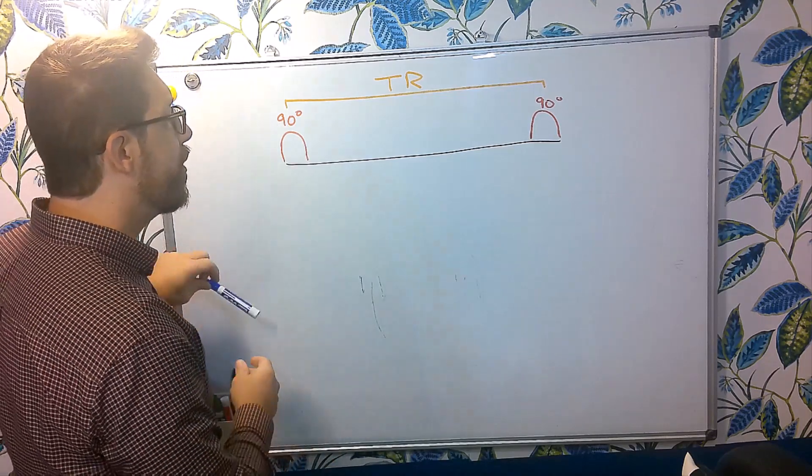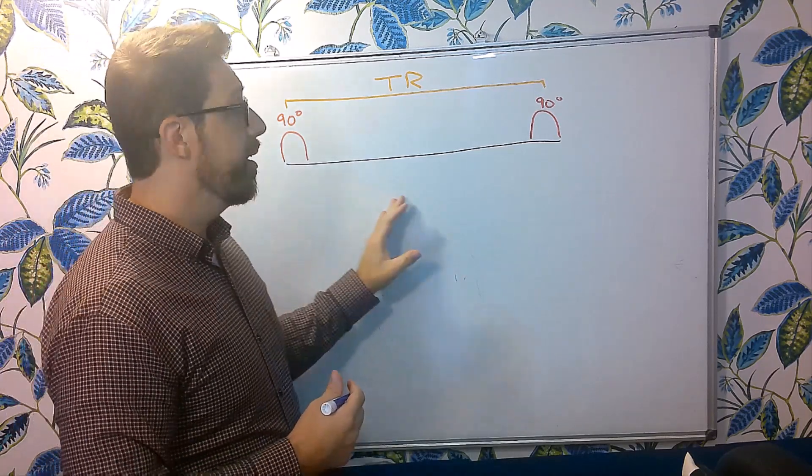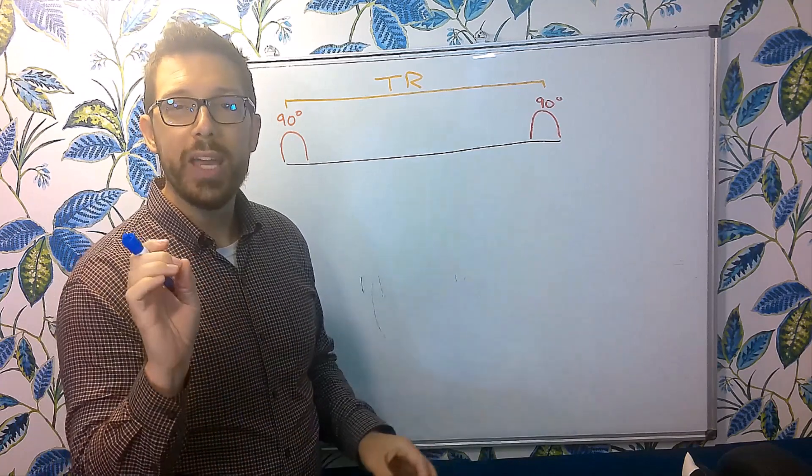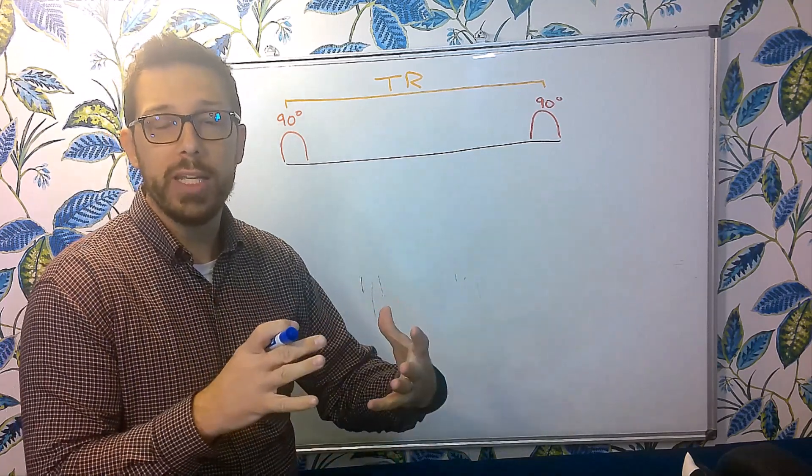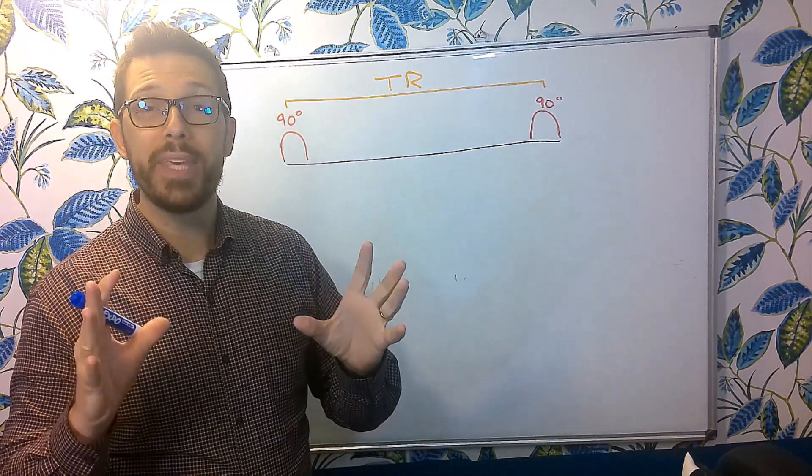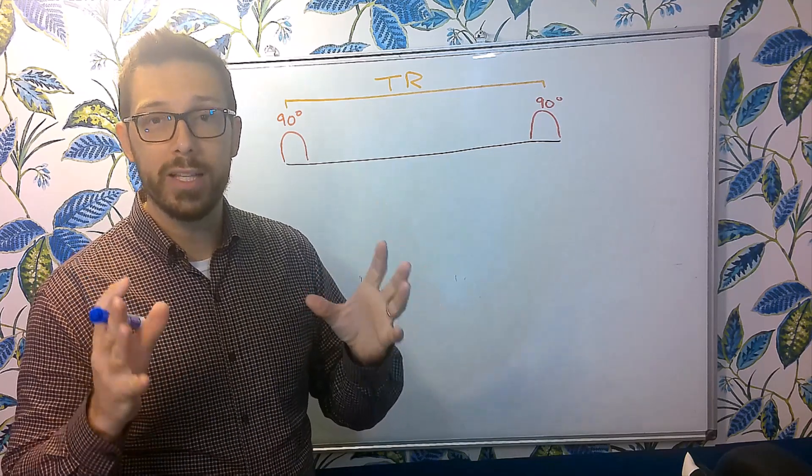So what we do is we have an echo that's produced after excitation. And we have to time things perfectly with our gradients to make sure that we're collecting peak signal when we want to collect peak signal.